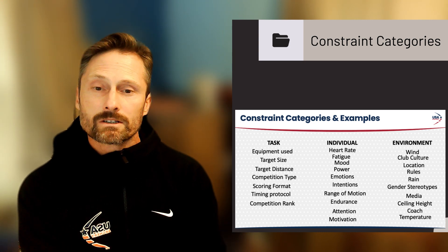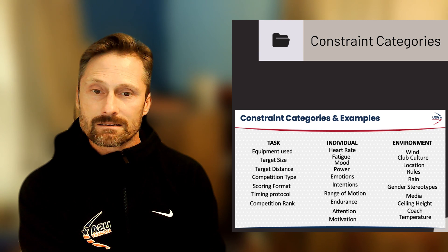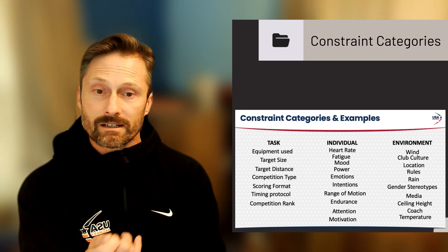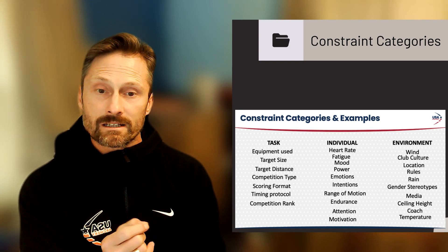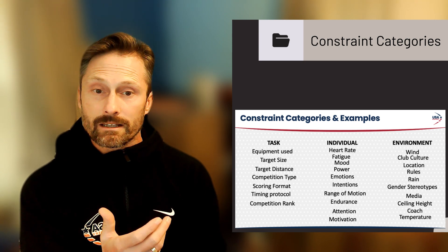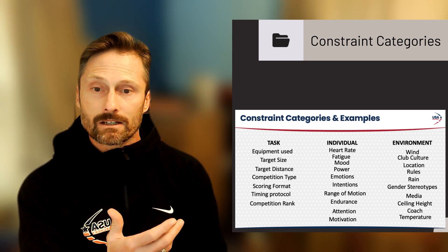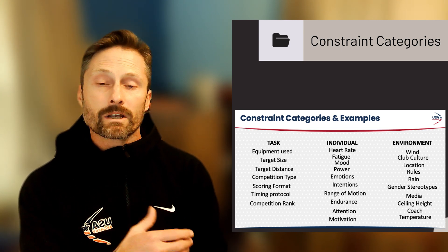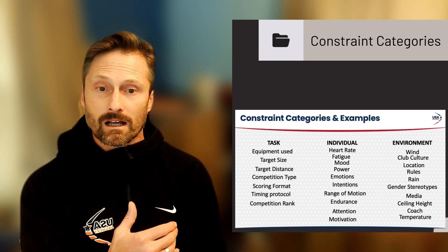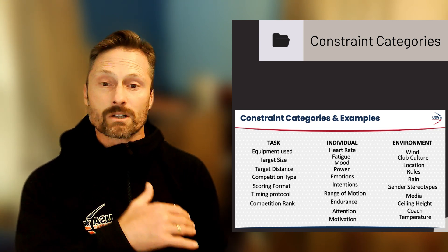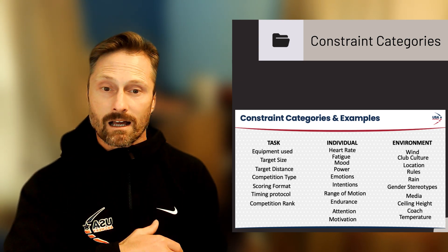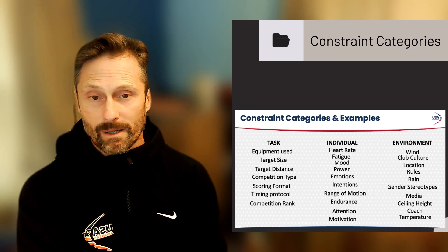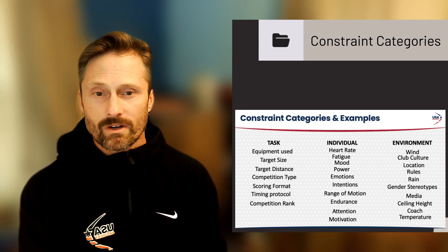Those are all examples of constraints created by manipulating the task. We can also create constraints by manipulating the individual or the athlete. For instance, we could have an athlete practice shooting with a higher heart rate — have them do jumping jacks until their heart rate reaches 160, then come to the line and practice their breathing to see how quickly they can bring that heart rate back down. That would be an example of constraining the individual.